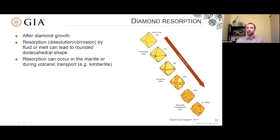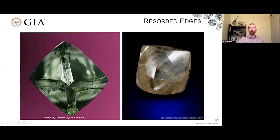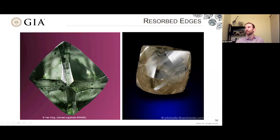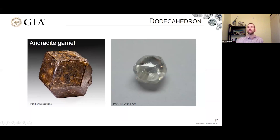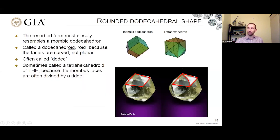Here's an octahedron on the left where the edges have been resorbed away, and on the right, another octahedron resorbed even further. You'll notice the new surface appearing isn't perfectly flat — it's got a slight curve and a line dividing what would otherwise be a rhombus shape. This shape roughly approximates a dodecahedron. A garnet crystal makes an ideal dodecahedron with flat faces, but what we see in diamonds resembles that with slightly curved faces. So we call it a dodecahedroid — the '-oid' part meaning it's not really a dodecahedron, just approximating one, because these faces have been resorbed rather than grown.